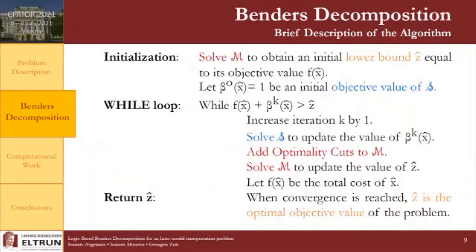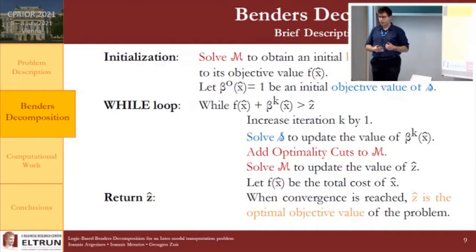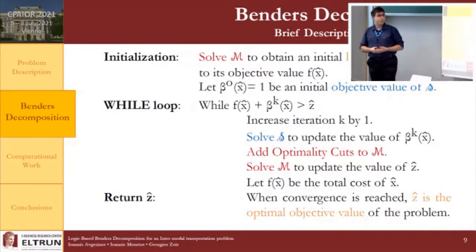We solve this decomposition with the following algorithm. Initially, we solve the master problem to obtain an initial lower bound z-hat equal to the objective value of the master problem, with the initial objective value denoted beta equal to one. In the while loop, as long as z-hat is less than the sum of function f and the sub-problem objective value, the iteration count increases, the sub-problem is solved to update its objective value, a set of multi-cuts is added to the master problem, and the master problem is solved again to receive the incumbent lower bound. When convergence is reached, z-hat is the optimal objective value of P.